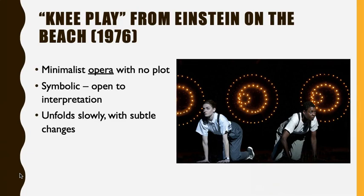The piece in Chapter 61 is titled Knee Play and comes from his opera Einstein on the Beach from 1976. These titles are very strange — what is a knee play? What does it mean for Einstein to be on the beach? That really is kind of the point. This is an opera that doesn't actually have a plot — it's a kind of abstract opera, which is really the antithesis of what we think of as opera. Removing the plot or narrative from an opera is a pretty radical idea.